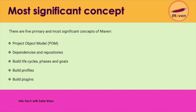There are five primary and most significant concepts of Maven. The first one is the Project Object Model, meaning the POM file. The others are: dependencies and repository, build lifecycle phases and goals, build profiles, and build plugins. Whenever you create a Maven project, it will provide something called a pom.xml file. By default, it will create a pom.xml file, which is the main file. The whole Maven project is basically controlled by the pom.xml file.